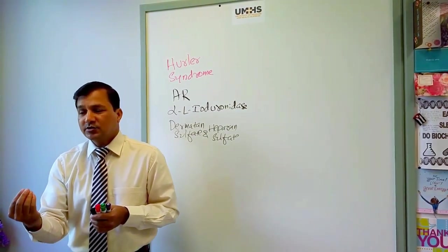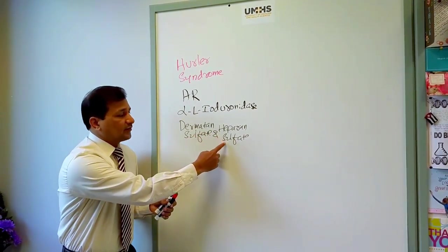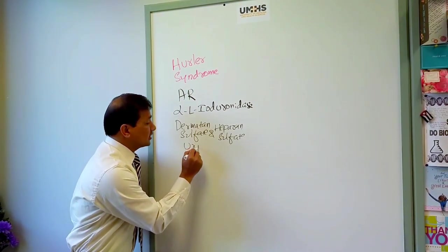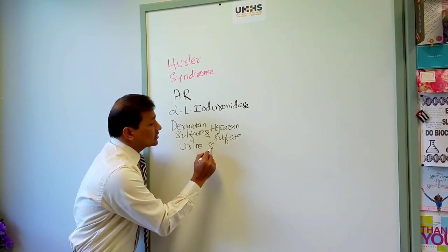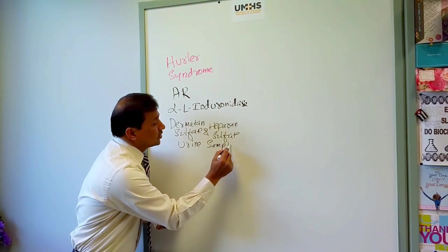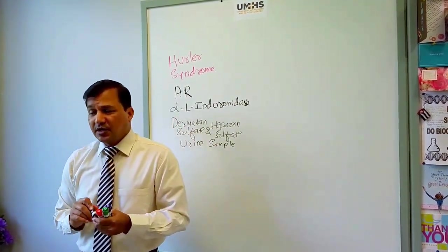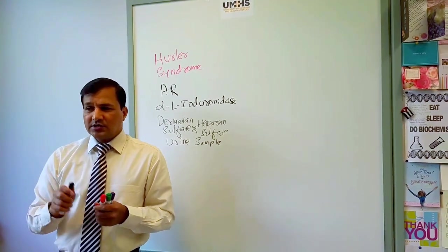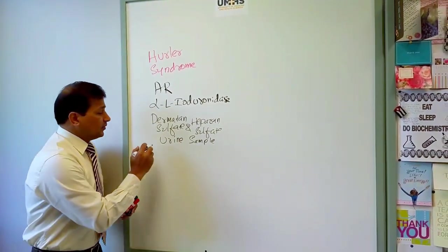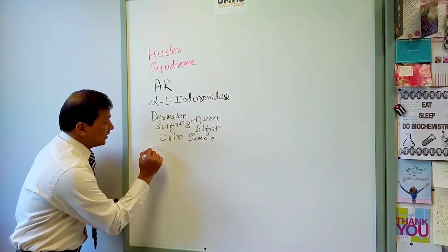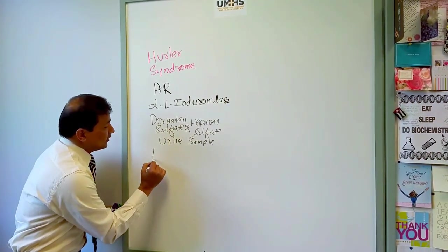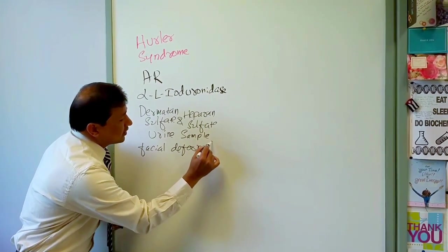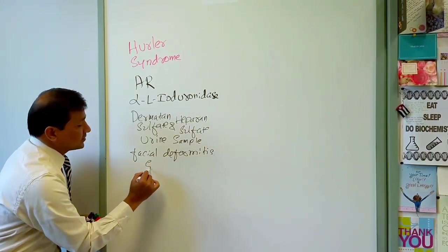The partially degraded glycosaminoglycans — dermatan sulfate and heparan sulfate — are found at high levels in the urine sample. That is a must to remember. Now, what are the signs and symptoms to look for to diagnose Hurler syndrome?